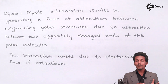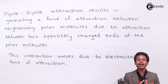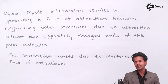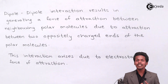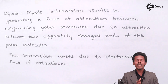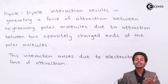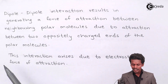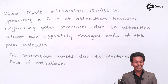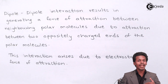Suppose we take a polar molecule like HCl. If a second HCl molecule is nearby, there will be a force of attraction between them. The Cl atom, which carries a partial negative charge, will attract the positive end of the neighboring molecule. This interaction arises due to electrostatic force of attraction, because the molecules carry both negative and positive charges within them, and these charges interact with other nearby molecules as well.